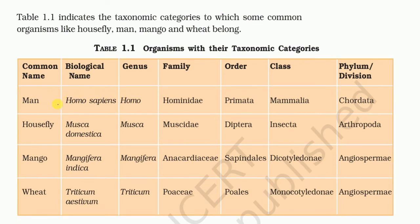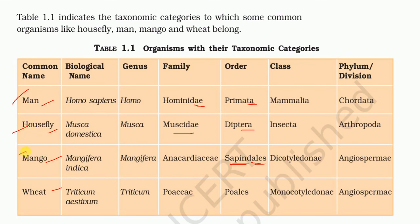Here are the scientific names of some organisms: man, housefly, mango, and wheat. For family names, there is always a suffix ending in '-ae' — for example, Hominidae, Muscidae, and for mango, Anacardiaceae. For order names in animals, they always end in '-a': Primata, Diptera, Carnivora. In plants, order names always end in '-ales' — for example, Sapindales. You can pause this video and study the scientific names of man, housefly, mango, and wheat from the table.